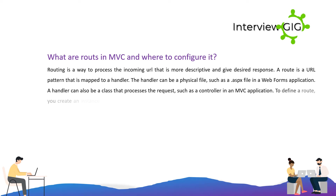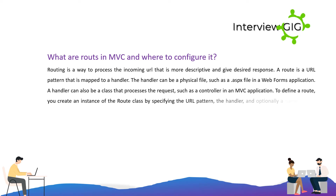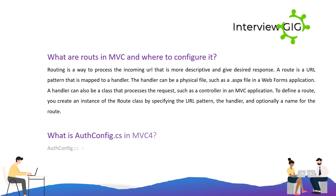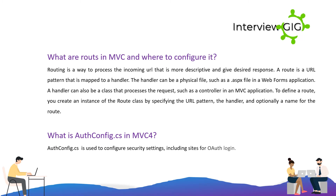To define a route, you create an instance of the Route class by specifying the URL pattern, the handler, and optionally a name for the route. What is AuthConfig.cs in MVC for? AuthConfig.cs is used to configure security settings, including sites for OAuth login.